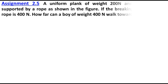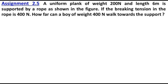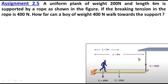Assignment 2.5: A uniform plank of weight 200 newton and length 6 meter is supported by a rope as shown in the figure. Since the plank is uniform, the center of gravity is at the center, meaning the CG acts at 3 meters. The breaking tension in the rope is 400 newton.